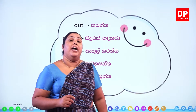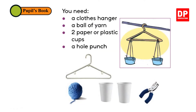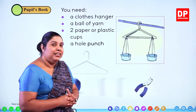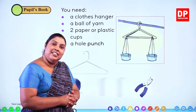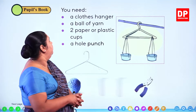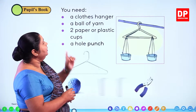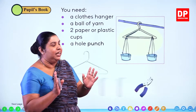Right, so now let's move and let's make a pair of scales like this. I want you to take your pupils book and then turn to this page. Now these are the things that we are going to need to make the pair of scales. You need a clothes hanger — a redi eellan hanger — to make this pair of scales.